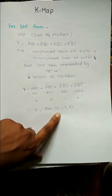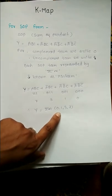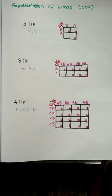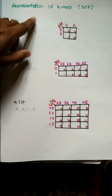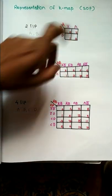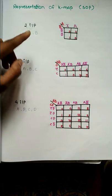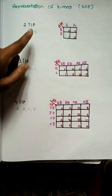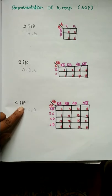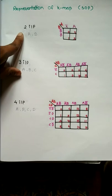Now we go for representation of K-map in SOP form. There are three types of K-maps: first is for two inputs, second is for three inputs, and third one is for four inputs. Let us go for first. There are two inputs denoted by A and B.